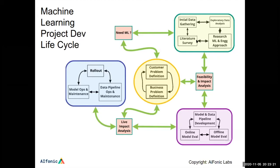The next step is feasibility and impact analysis. Once you have a potential solution, what is the cost of building it? In terms of data scientist cycles, dev cycles, and time to get it into production? And what is the kind of impact it can make? One approach is to build a straw man model — something very simple, possibly not even involving ML — and see if it moves the needle a little based on your sample data. If it seems promising, you say it possibly might make impact and proceed.